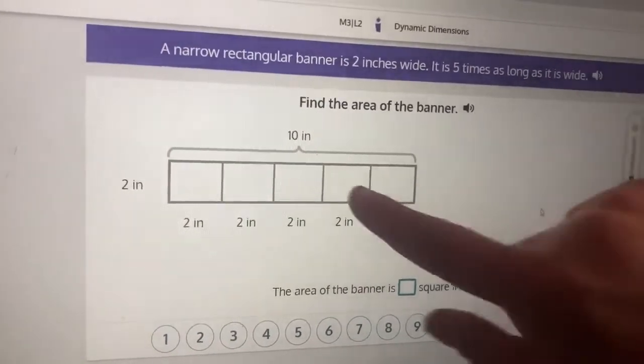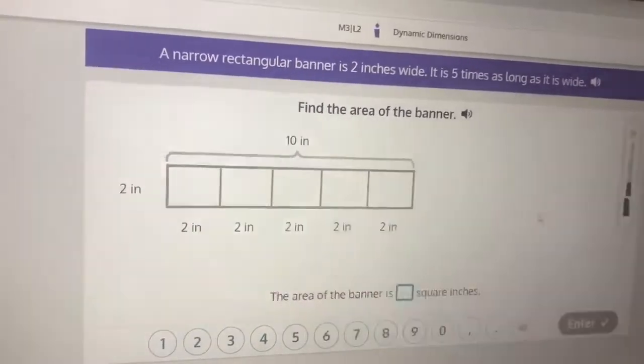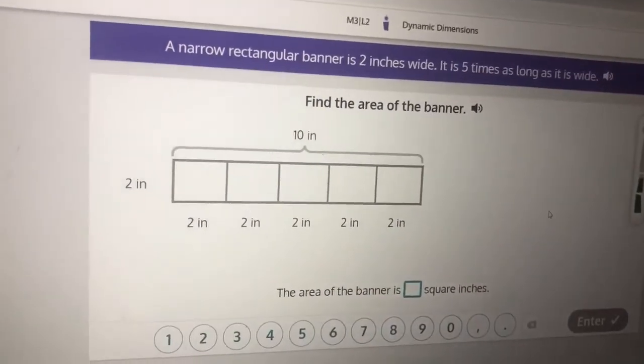Area means to multiply the two numbers. So our two numbers are 10 and 2, so we're gonna do 10 times 2.